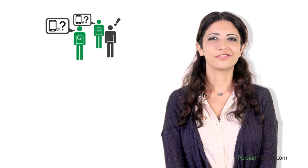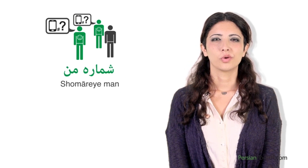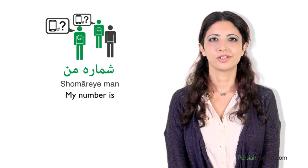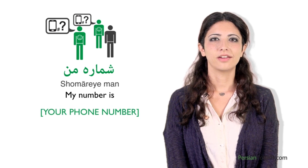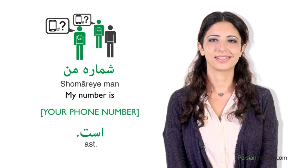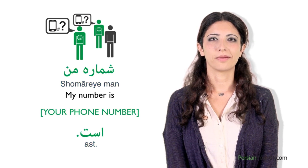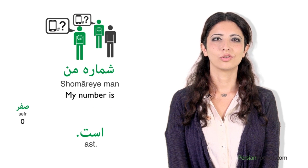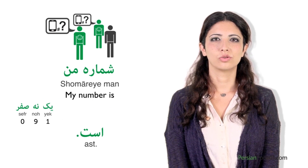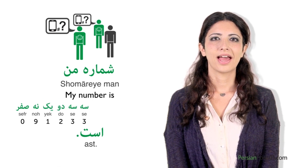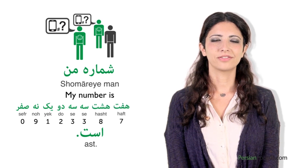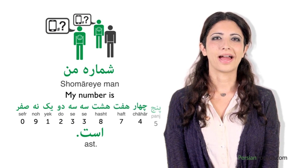You don't have any more excuses — you can give your friends your cell phone number in Persian. Let's try it together. We'll use the phrase 'shomareyeman,' which means my number is. You say the numbers after that and then finish by saying 'ast.' Shomareyeman: sefr, noh, yek, doh, seh, seh, hasht, haft, chahar, panj, ast.